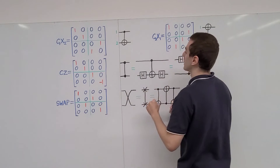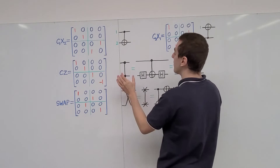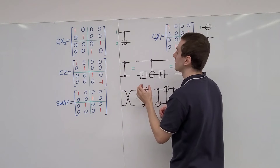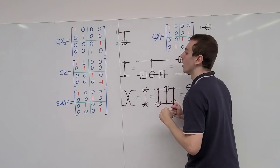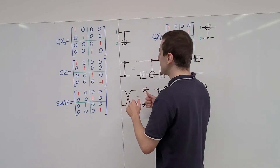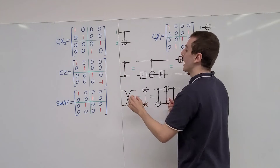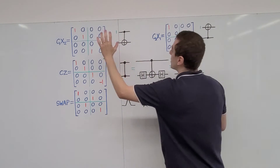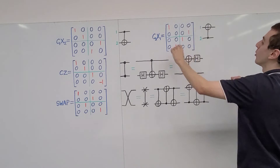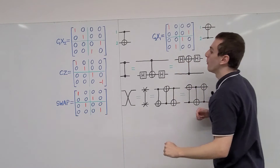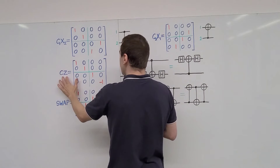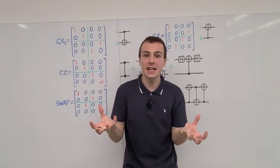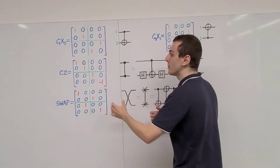This sign flip occurs conditional on the state of the control qubit. The diagram represents the CZ or controlled phase gate. Notably, for the CZ gate, it doesn't matter which qubit we call the control and which we call the target — unlike the controlled NOT gate where the matrix changes when we relabel qubits. The controlled Z gate gives the exact same matrix regardless of which qubit is labeled first, which is why the symmetric symbol is used.